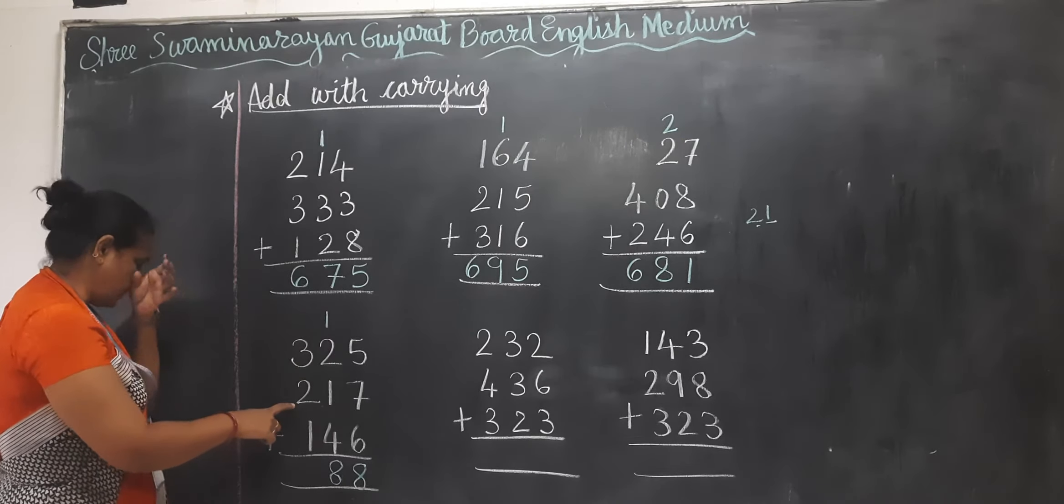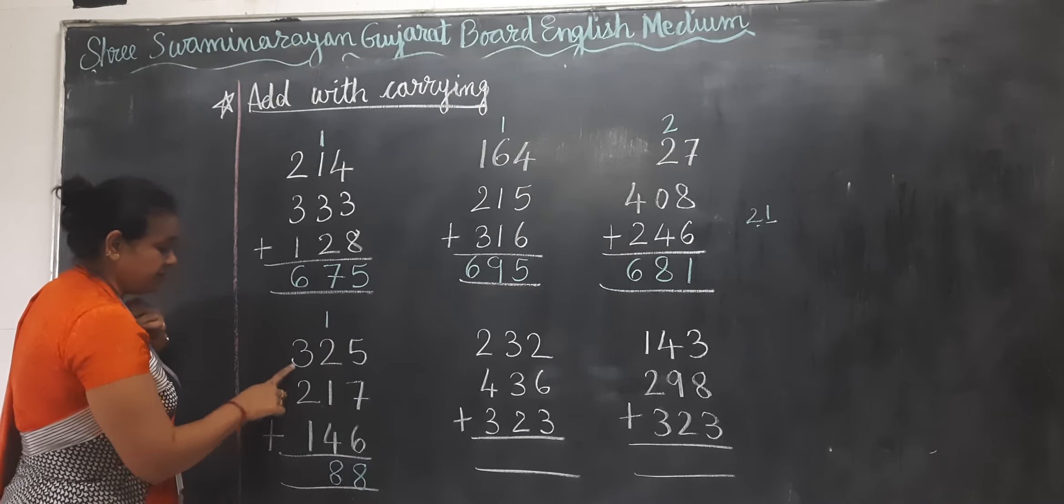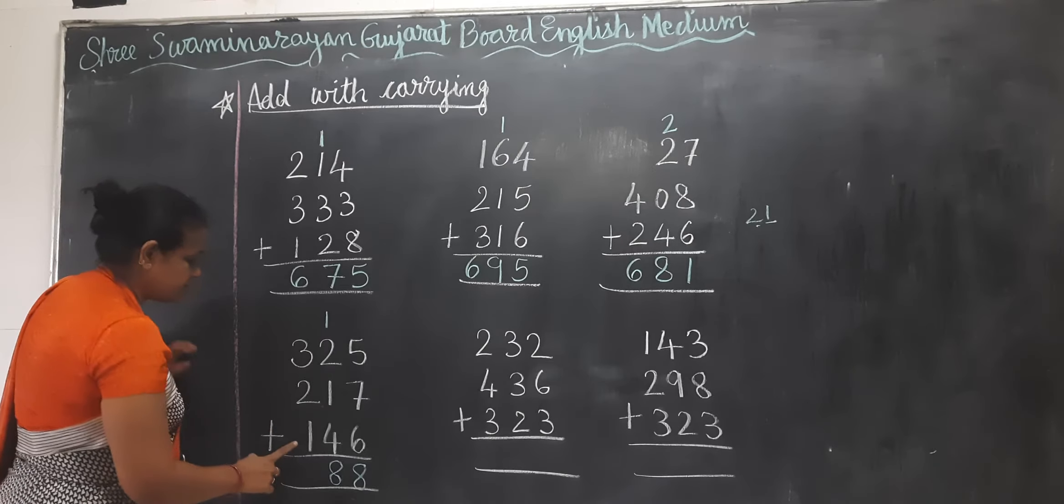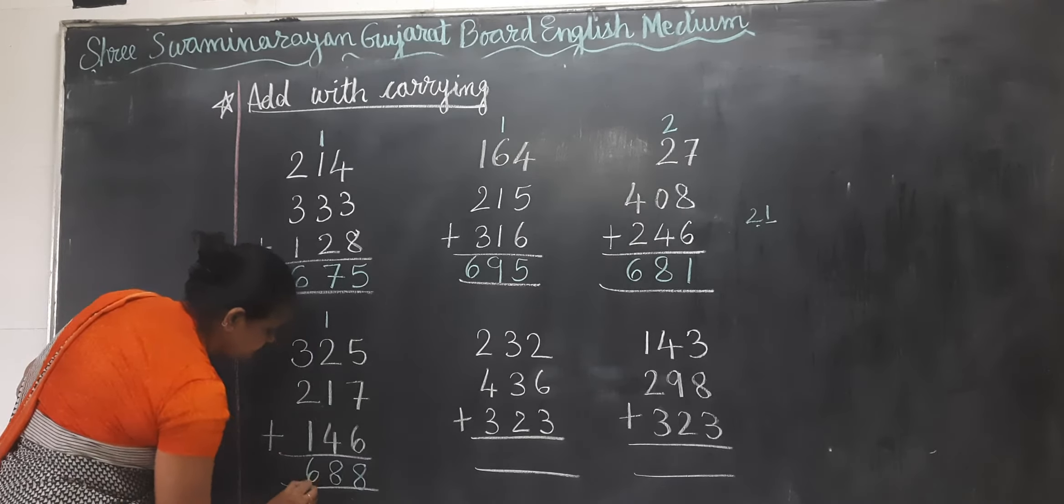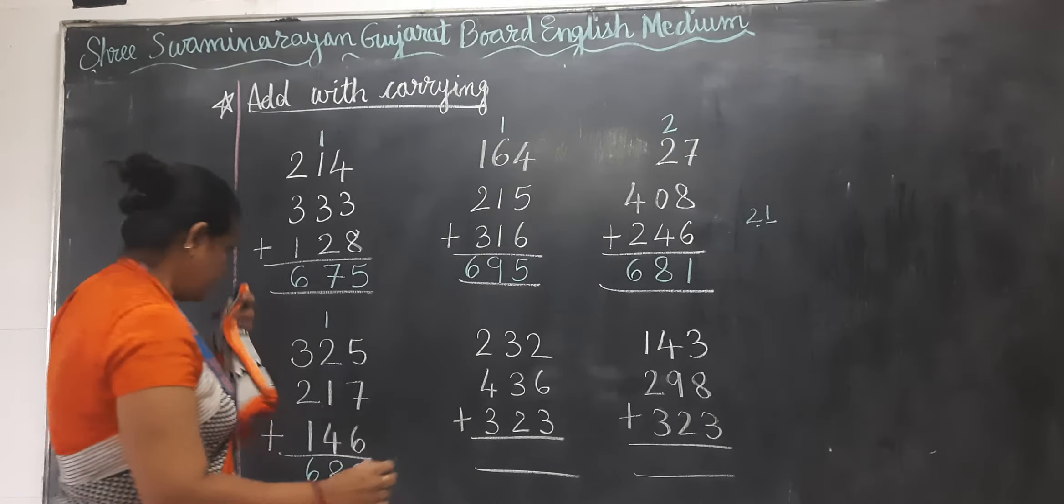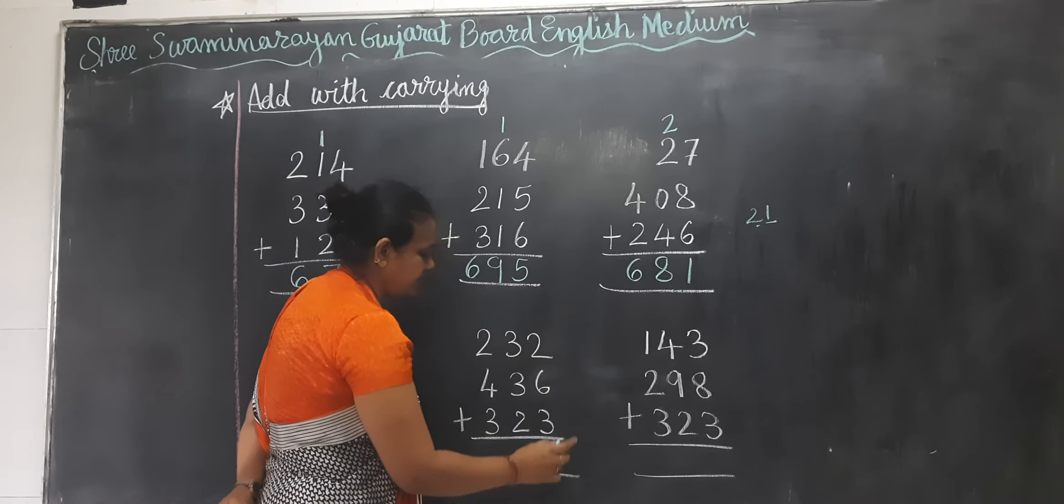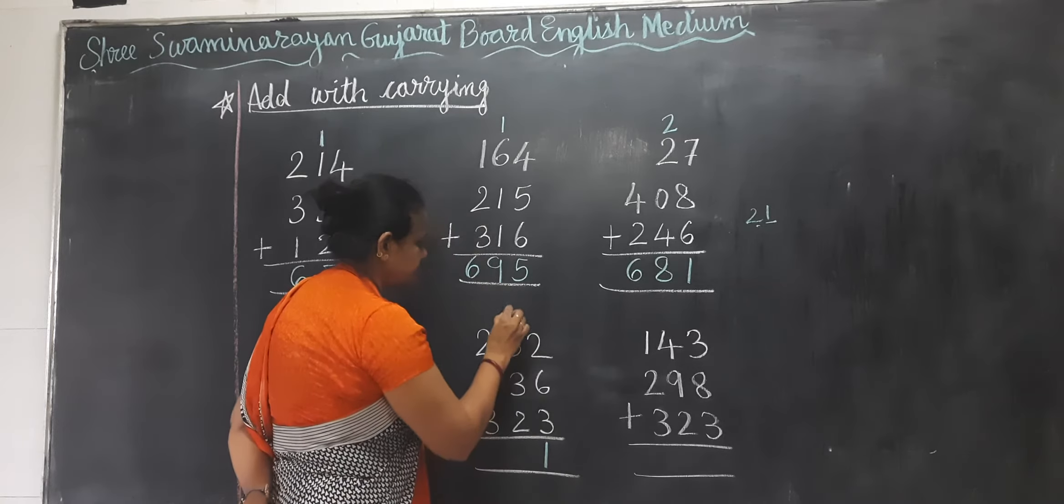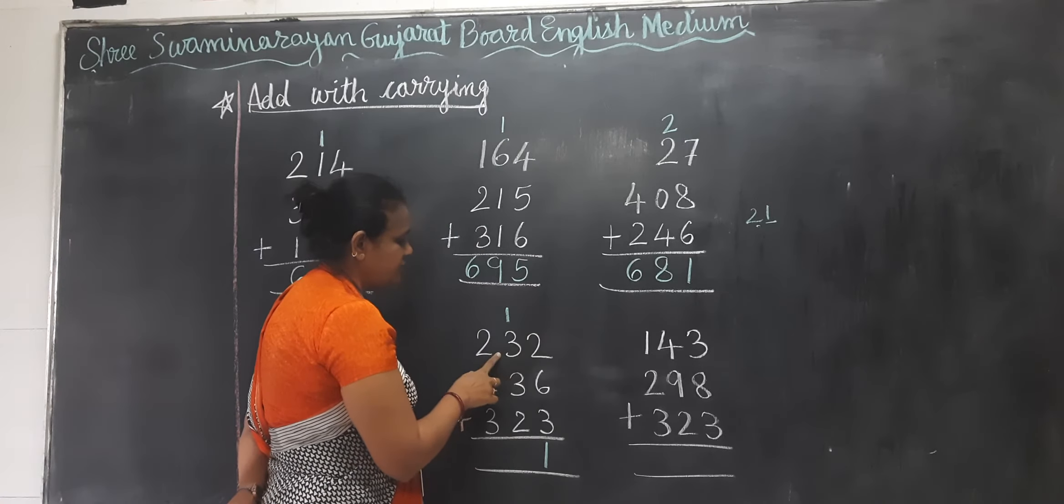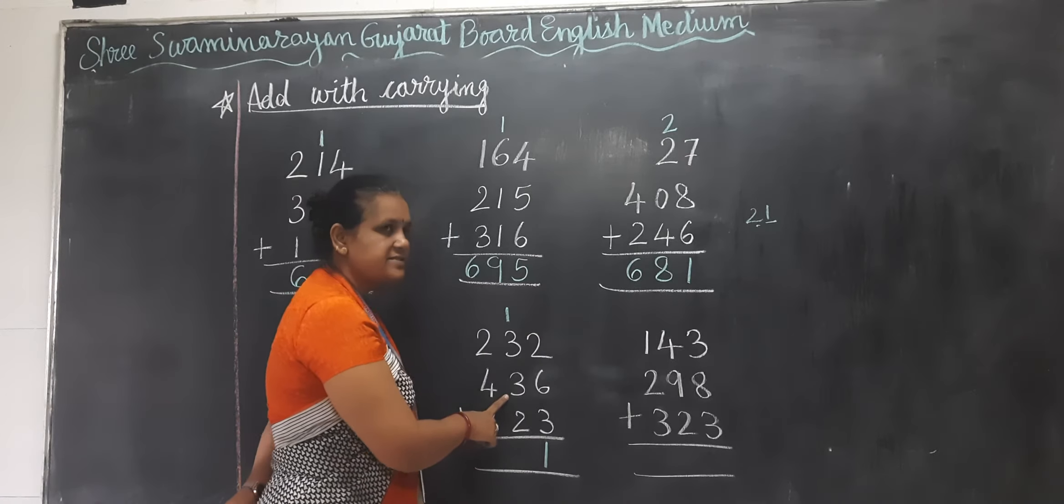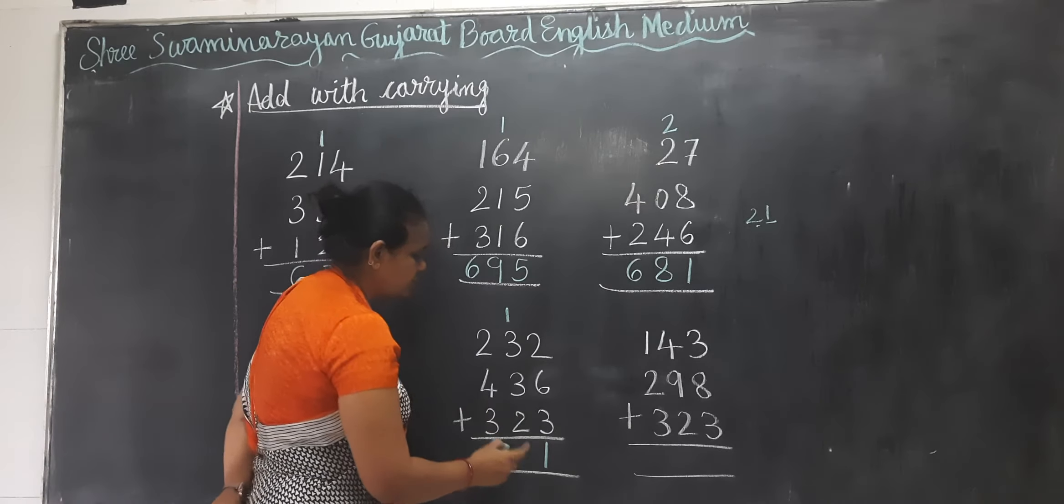3 plus 5 equals 8. 8 plus 5 equals 13. Next is 2 plus 6 equals 8. 8 plus 3 equals 11. 1 plus 3 equals 4. 4 plus 3 equals 7. 7 plus 2 equals 9.